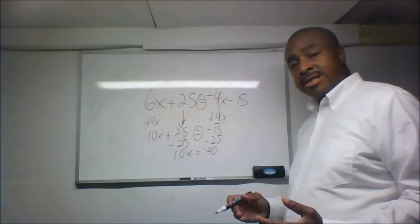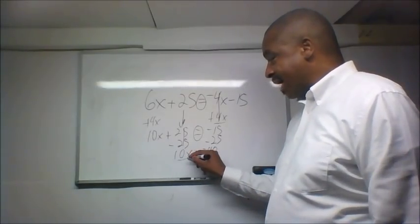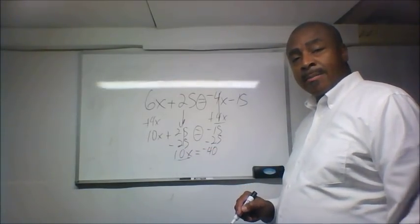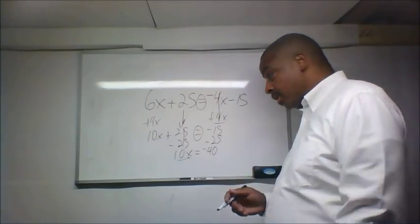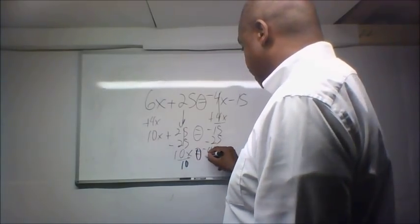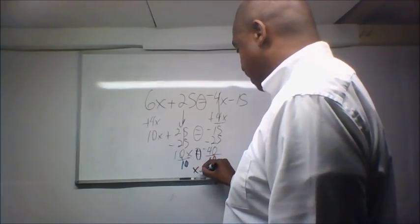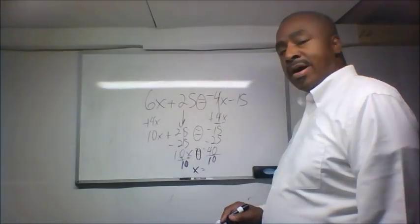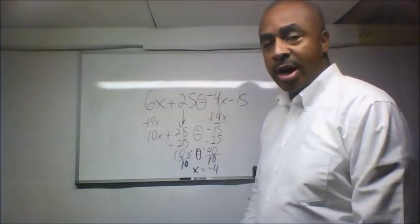Now, then the next step is again still doing the opposite. So right here you have x multiplied by 10. So I'm going to do the opposite of multiplication, which is division. So x divided by 10. And remember, this is an equation. And so if I do it to this side, I'm going to do it to this side. That cancels out, leaving me x. Minus 40 divided by 10 gives me a minus 4. And that is our answer.